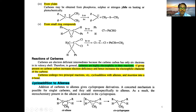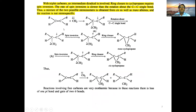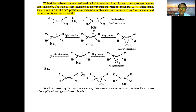For triplet carbene, the intermediate involved is a diradical, and ring closure to cyclopropane requires spin inversion. The rate of spin inversion is lower than the rate of C-C single bond rotation. Thus we get a mixture of two possible stereoisomers. When an alkene reacts with triplet carbene — which has both non-bonding electrons with the same spin — spin inversion can occur before ring closure.